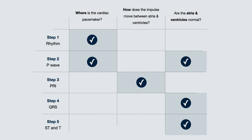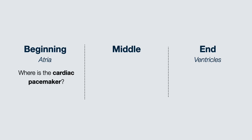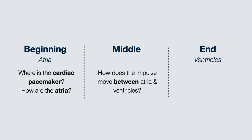The take-home message is to think of the aim of looking at an ECG as telling the ECG's story. Like most stories, it has a beginning, middle, and end. The beginning is the atria — describe the origin of the electrical impulse and what is happening at the atrial level. The middle describes how electrical activity connects atria and ventricles — normal AV node pathway, heart block, or accessory pathway. The end focuses on the ventricles — is electricity moving normally and is the anatomy normal?